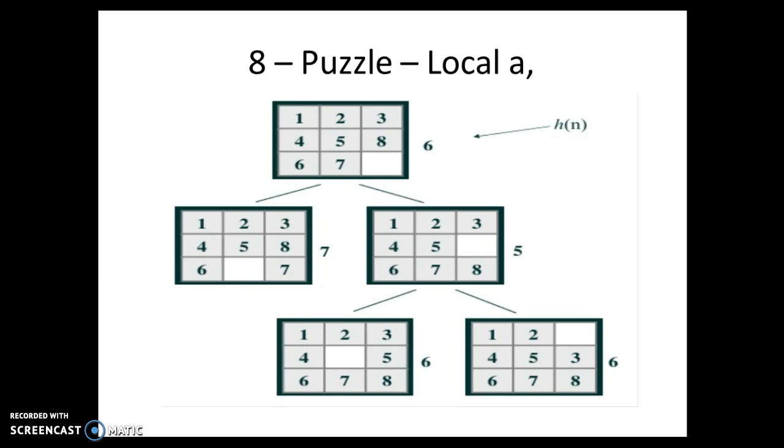So consider the first scenario, my h of n is 6. So from this particular state, there are two possible moves. One, I can move 7 to the state. The other, I can move 8 down. So for each of the possible state, we are calculating the h of n value, that is the heuristic value. So the first scenario, the heuristic value is 7. And for the second scenario, the heuristic value is 5.